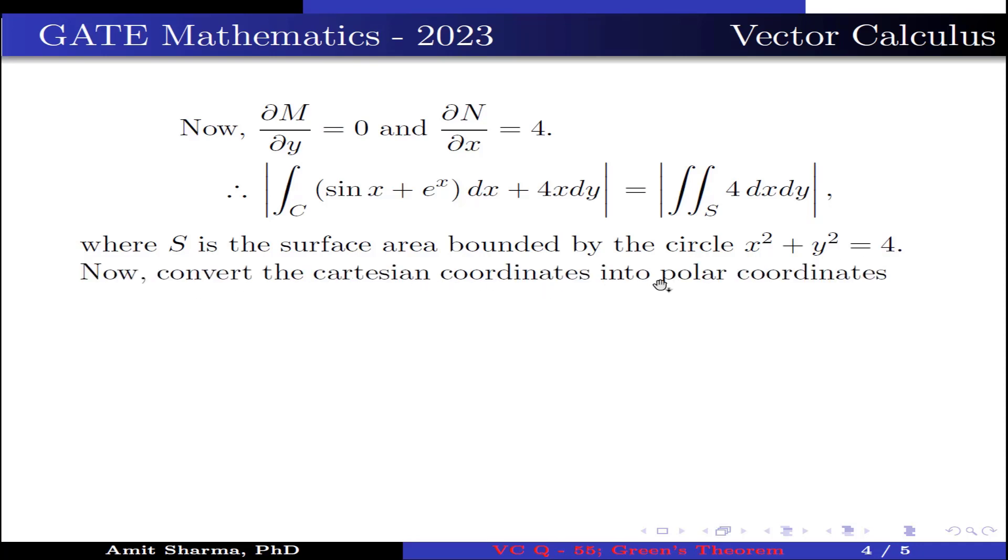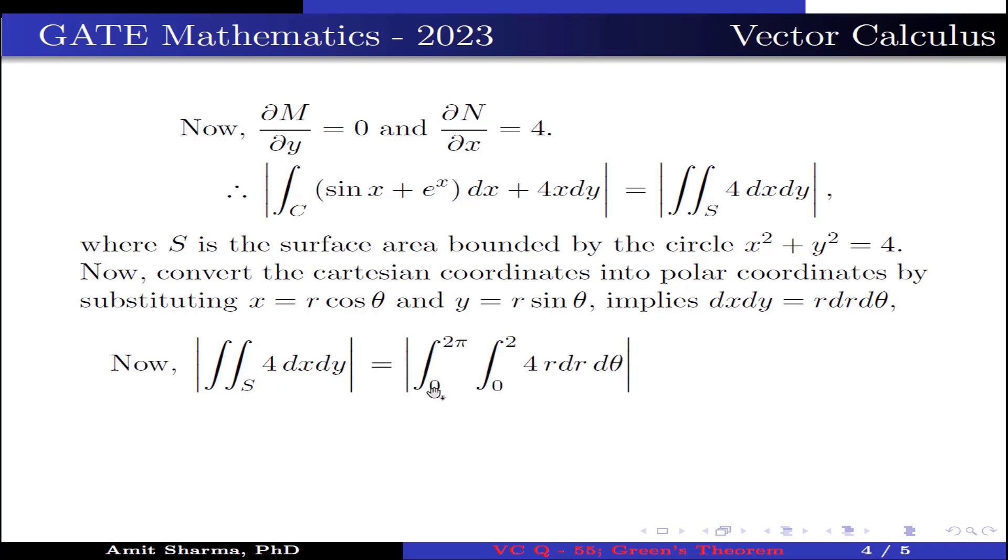Now, convert the Cartesian coordinates into polar coordinates by substituting x = r cos θ and y = r sin θ. This implies dx dy = r dr dθ. Now, |∬_S 4 dx dy| is converted into |∫_0^{2π} ∫_0^2 4r dr dθ|.